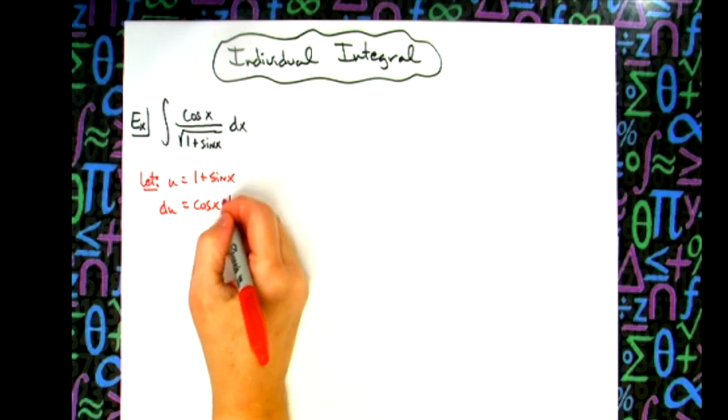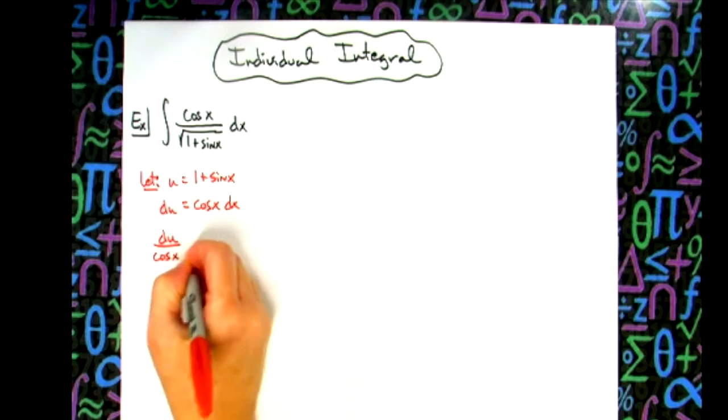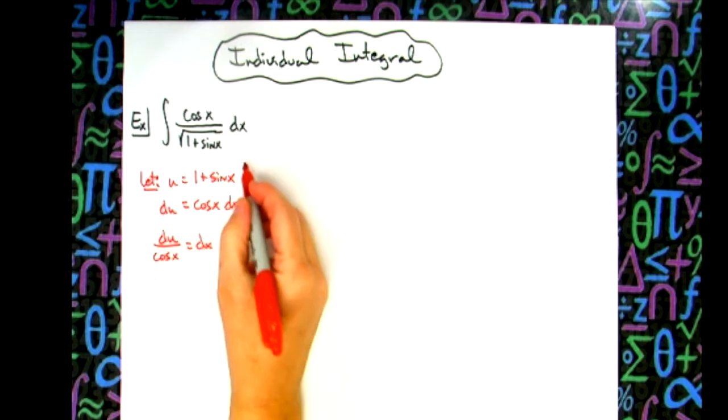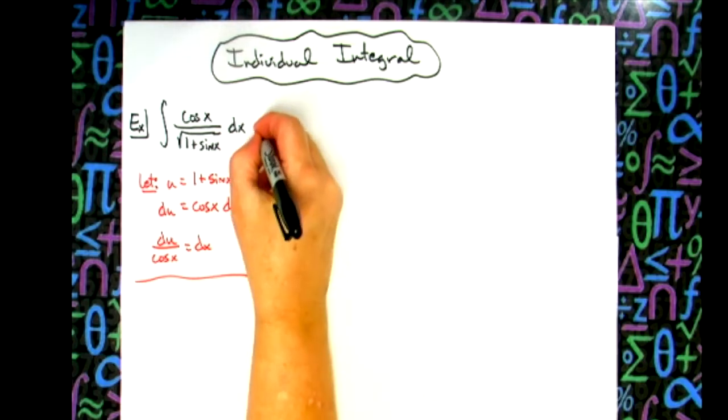We're going to go ahead and solve all the way down for that dx, so we'll have du over cosine x. After we get to that point, then we're going to come back up to our original integral and start doing some substitutions.